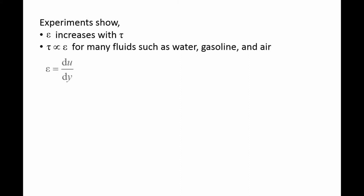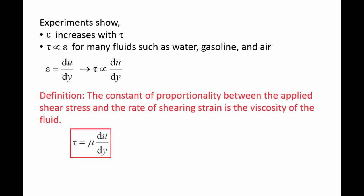Since the rate of shearing strain is equal to the velocity gradient, that means for these fluids the shear stress is proportional to the velocity gradient as well. The constant of proportionality between the applied shear stress tau and the rate of shearing strain du dy is the viscosity of the fluid. So viscosity relates the rate of deformation to the shear stress that is causing the deformation.